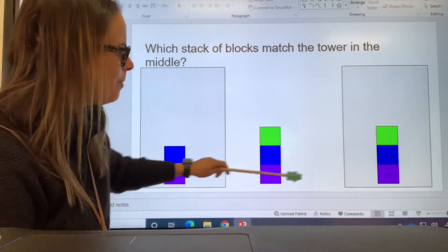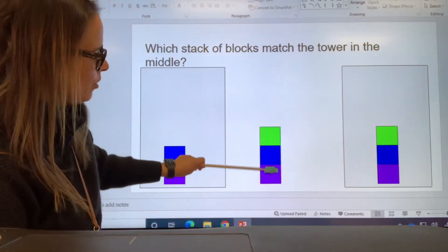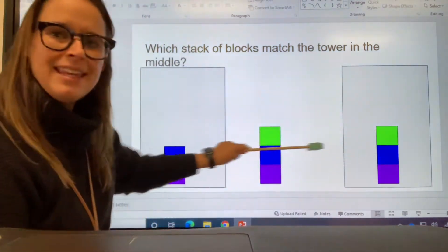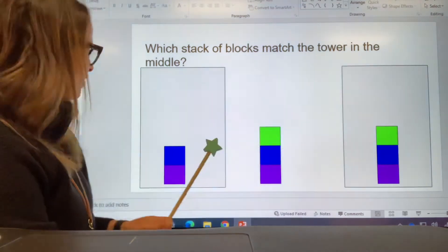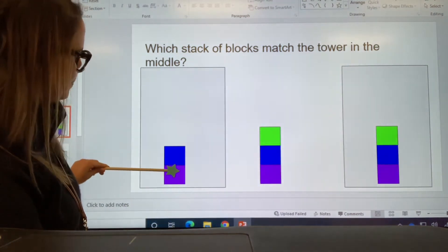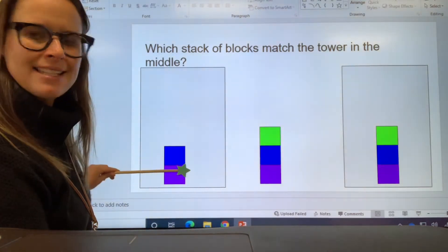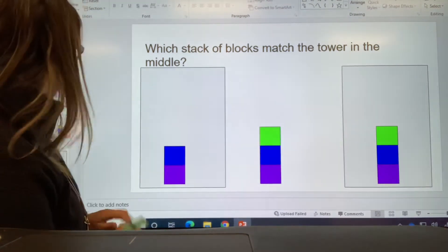They're even the same colors. We've got green, blue, purple. Green, blue, purple. One, two, three. One, two, three. These are the same. Look at this one only has one, two. We say this one has less. This one has less blocks than this one.